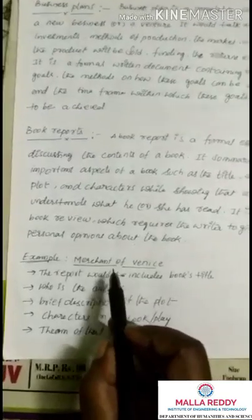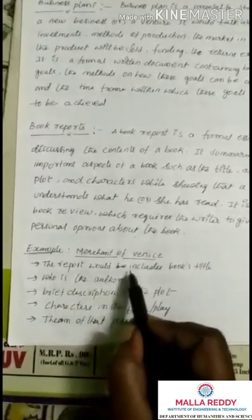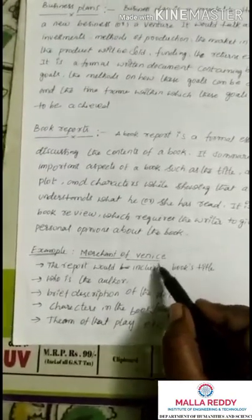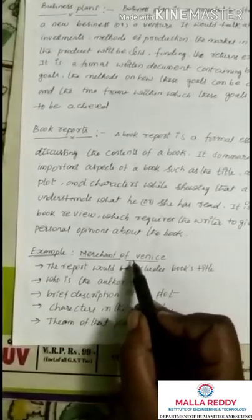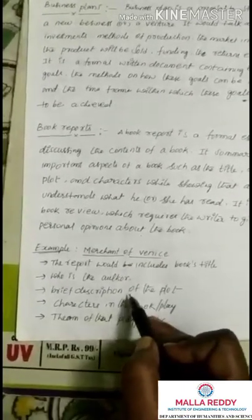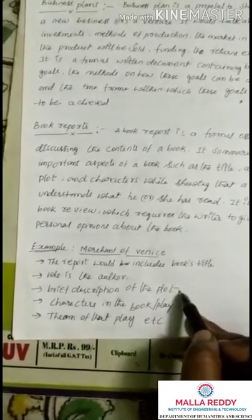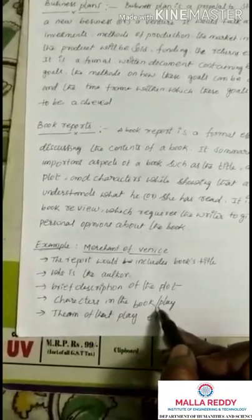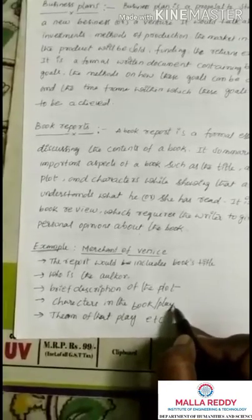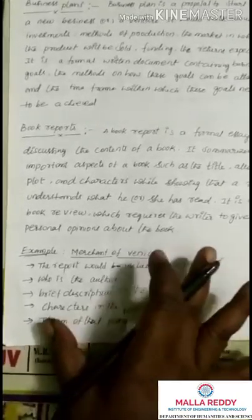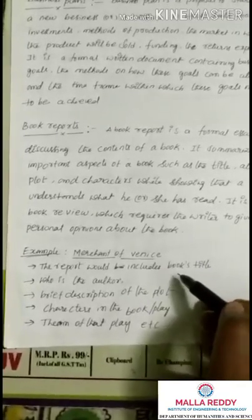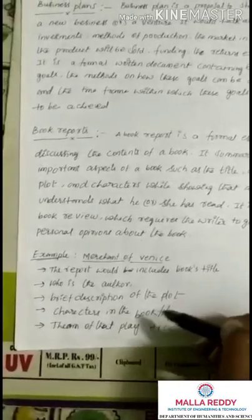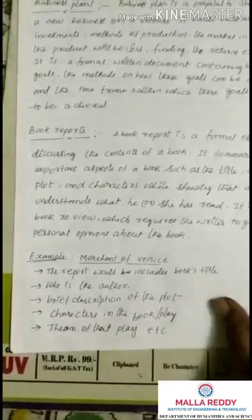For example, for Merchant of Venice, the book report would include the book's title, the author (Shakespeare), a brief description of the plot, the summary and theme, and the characters involved in the play.